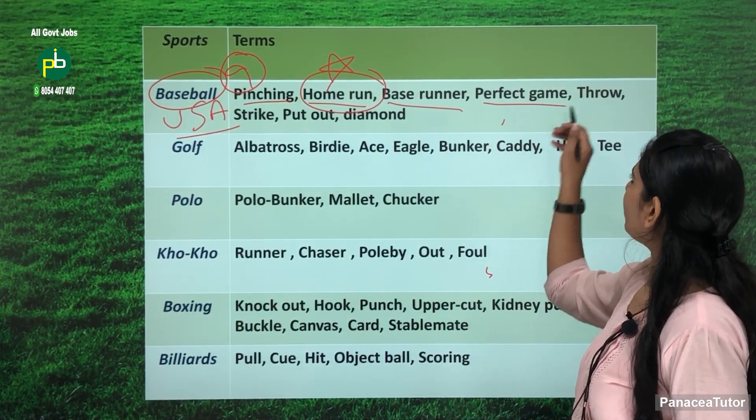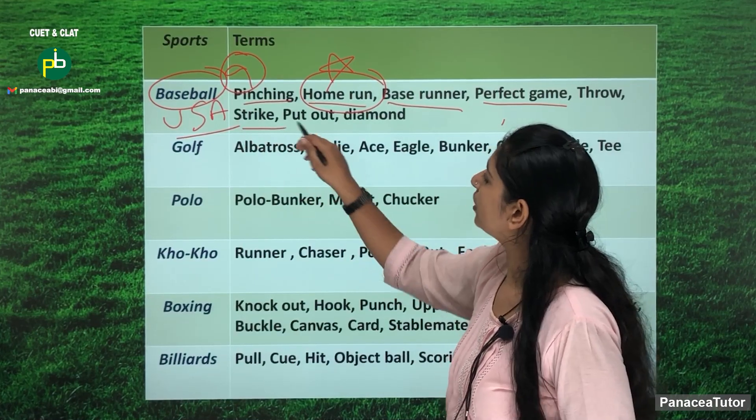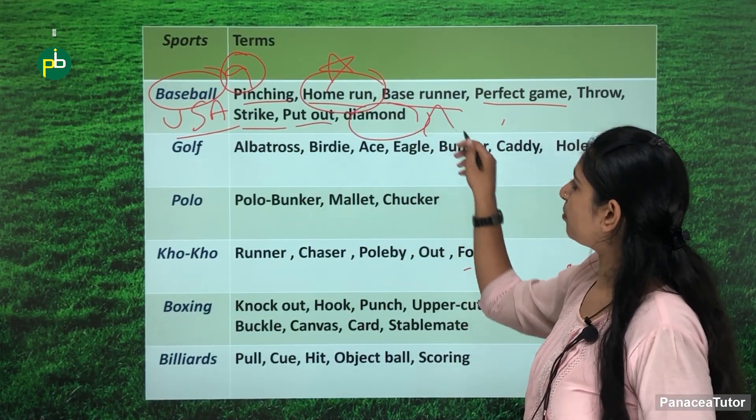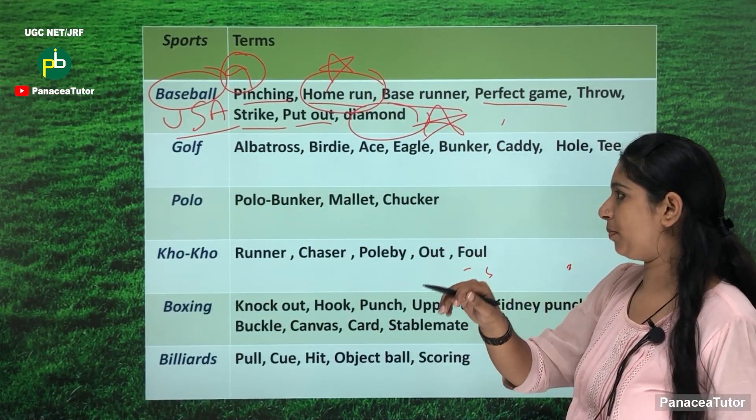Base runner, perfect game, throw, strike, put out and diamond. Diamond is also important and has been seen before in the exam.